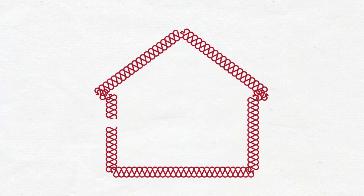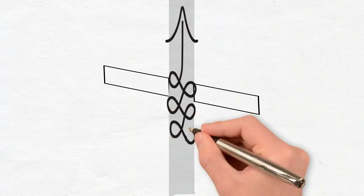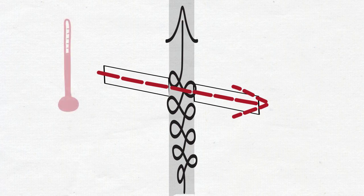A thermal bridge is an interruption in the envelope that allows heat to transfer through it. For example, a steel beam that goes from the inside through the wall to the outside. The wall is insulated, but the beam is like a conductor that transfers moisture because of the temperature differences.